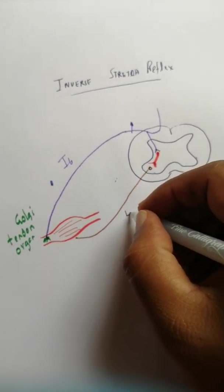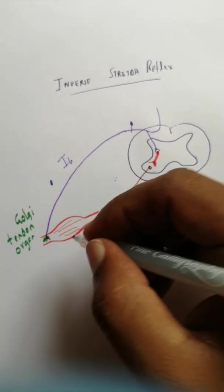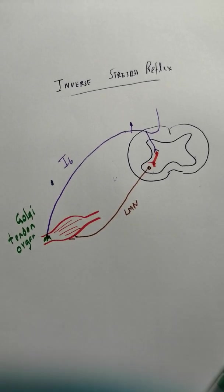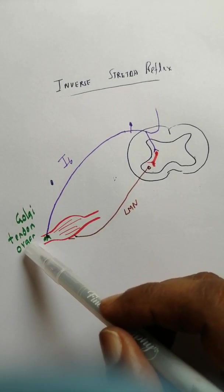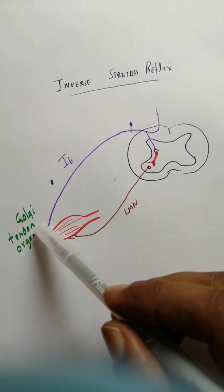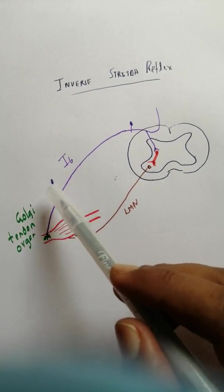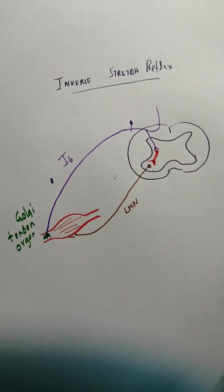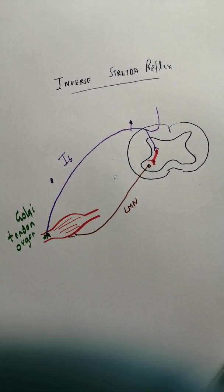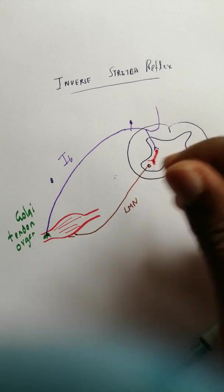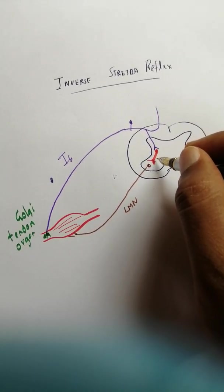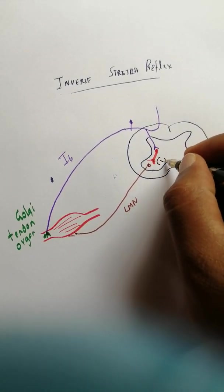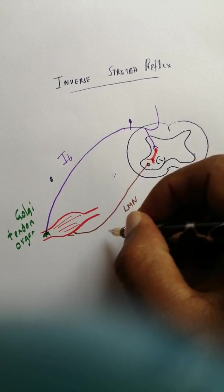What happens is that when the muscle is stressed excessively, the Golgi tendon organ is stimulated and that will send impulses through the 1B fibers. It will act on an inhibitory interneuron, and that inhibitory interneuron will inhibit the lower motor neuron.